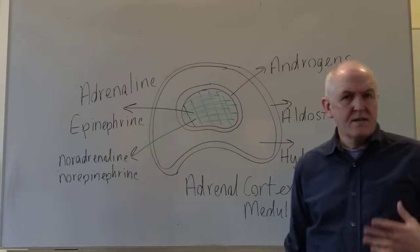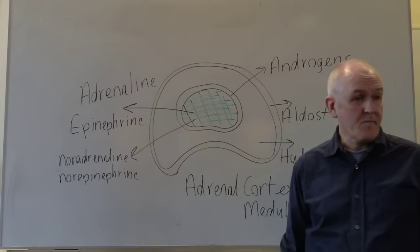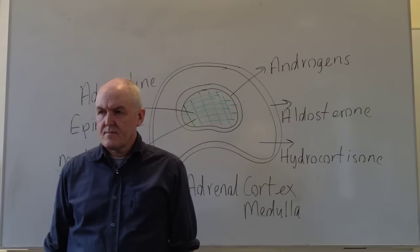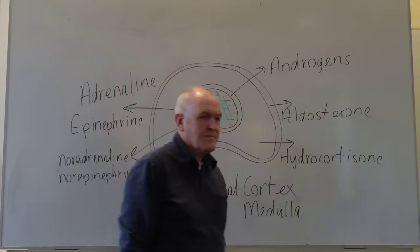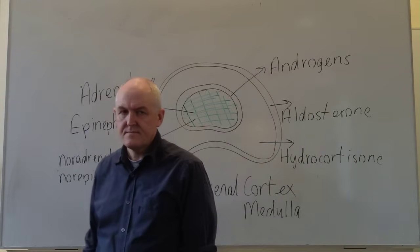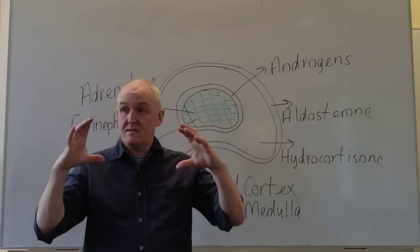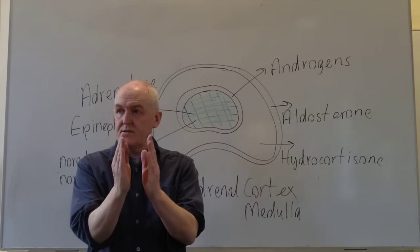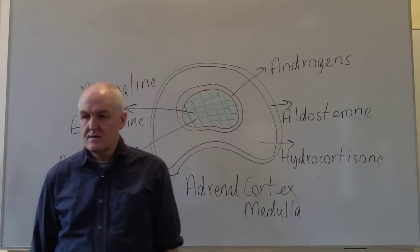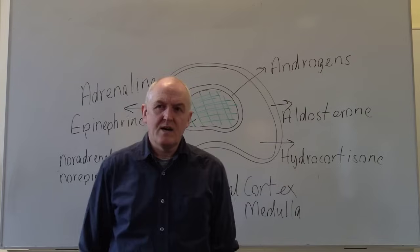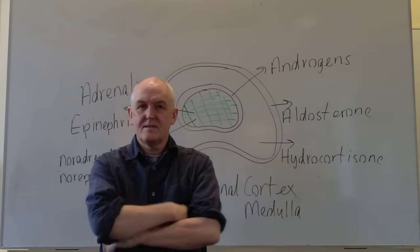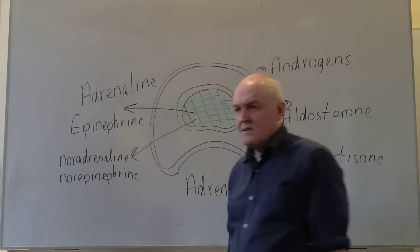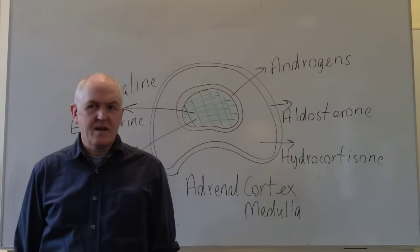Adrenaline stimulates the fight-or-flight response. It will increase heart rate, increase stroke volume, increase respiratory rate, bronchodilate the bronchial passages, reduce peripheral circulation making the person go pale, and dilate the pupils of the eye. The sympathetic nervous system — emergencies, exercise, and excitement — dilates the pupils.